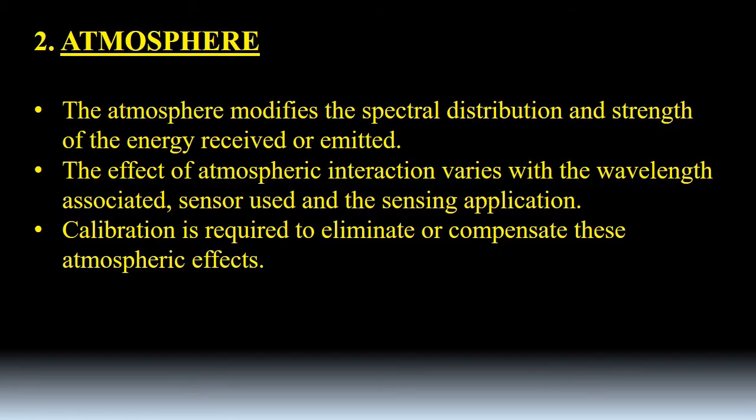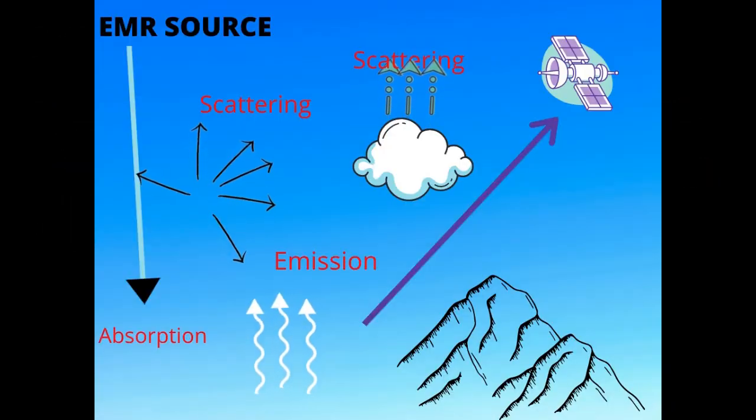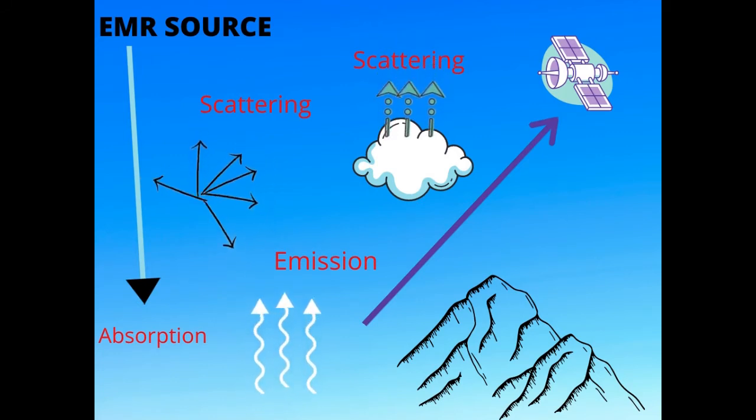The next one is all about atmosphere. The atmosphere modifies the spectral distribution and the strength of the energy it receives or emits. The effect of the atmospheric interaction varies with the wavelength associated. The sensors are used in the sensing application and calibration is required to eliminate or compensate these atmospheric effects. Just look here. Here the EMR source, electromagnetic radiation is the source, and here scattering is happening. Emission is there and absorption is there. Everything is recorded by the satellite, that means the sensor.